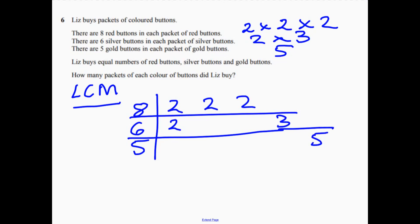So all we need to do is, if we do 2 multiplied by, just ignore the repeats, 2 and 2, 3 and 5. And if you multiply those together, that equals 120.